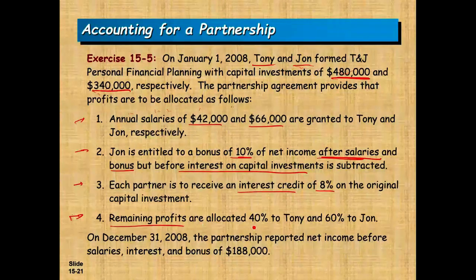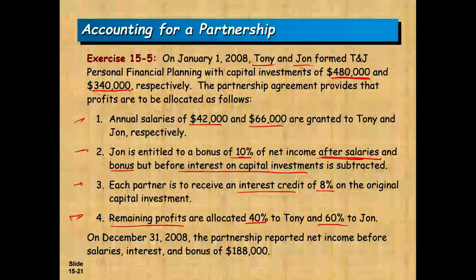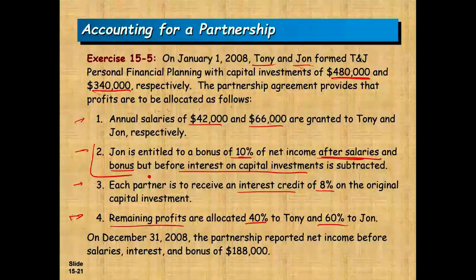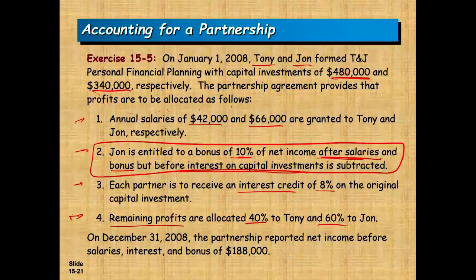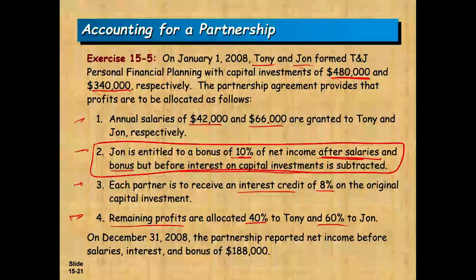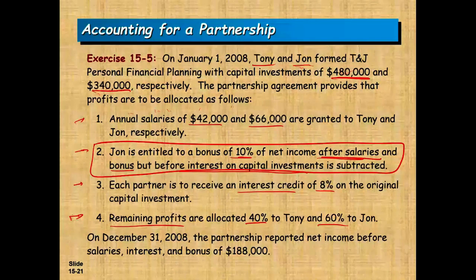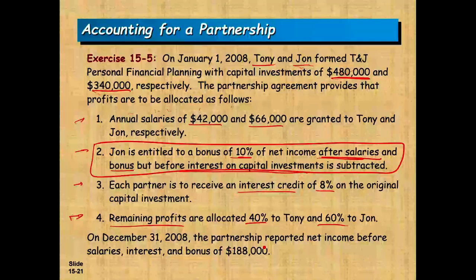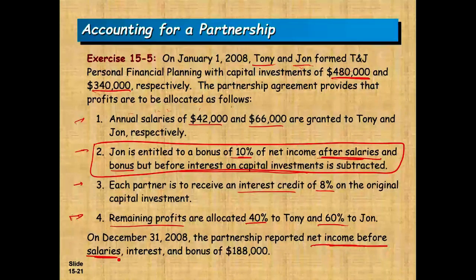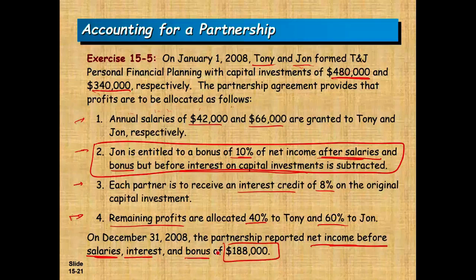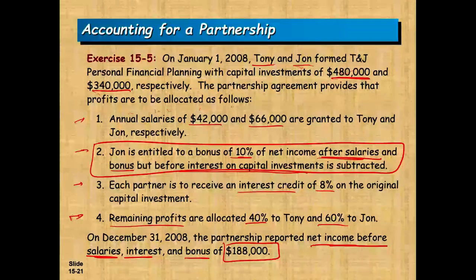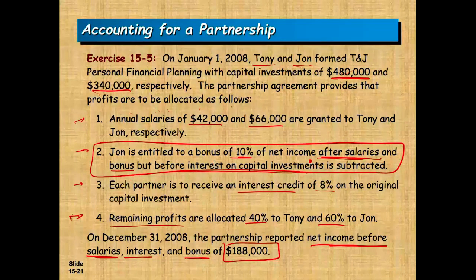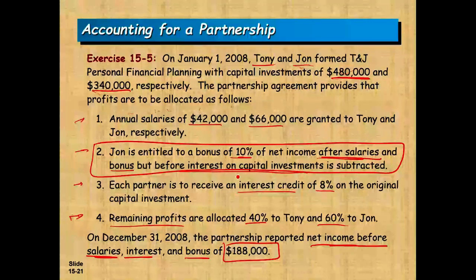John is entitled to a 10% bonus of net income after salaries and bonuses but before interest on capital investment is subtracted. Each partner is to receive an interest credit of 8% on the original capital investment, and any remaining profit is allocated 40% to Tony and 60% to John. On December 31st, the partnership reported net income before salaries, interest, and bonuses of $188,000. The bonus is computed after salaries, so we need to compute it first.